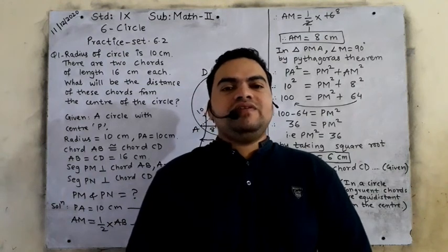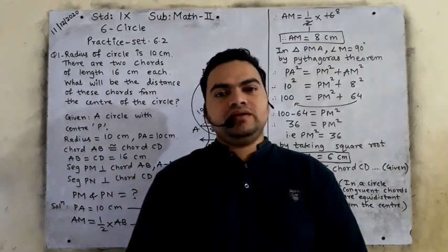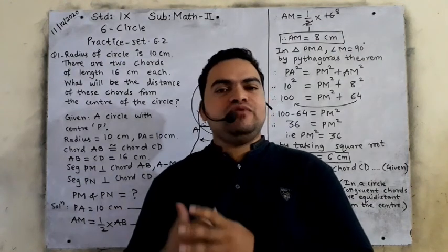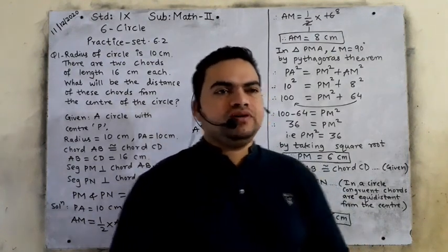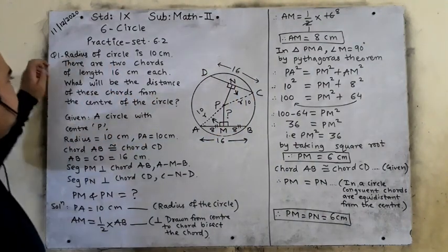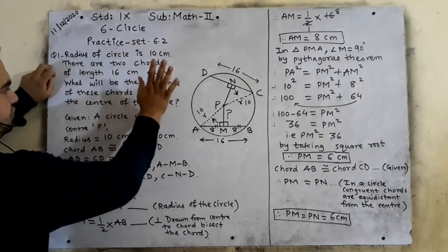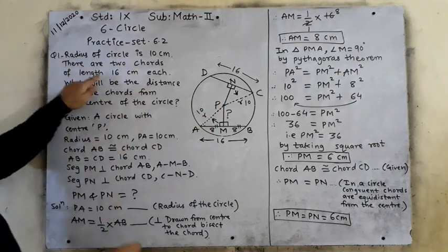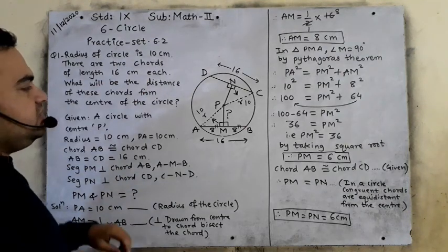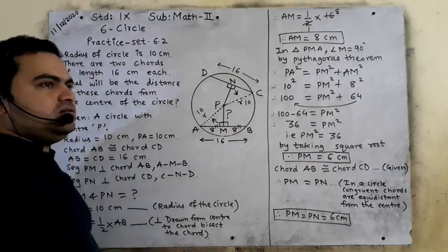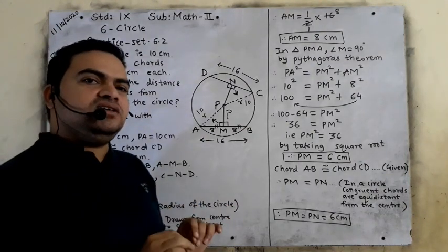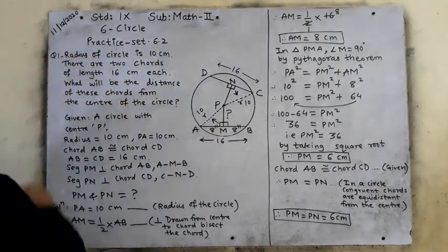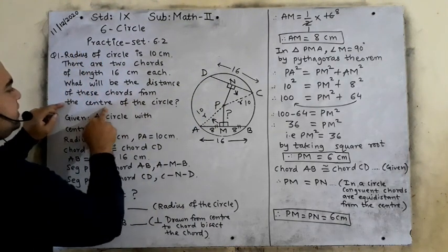Dear students, after the theorem we will see practice set 6.2, question number 1 and 2. Question number 3 is reduced from your syllabus for this year. Question number 1 is also based on the theorem only. Radius of circle is 10 cm. There are two chords of length 16 cm each — AB is one chord and CD is another chord. They are 16 cm each, meaning both chords are congruent.